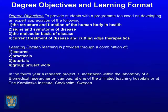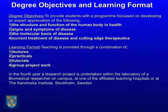So the degree objectives — the focus of this degree is in human health and disease rather than a more basic science degree. The first thing we try to teach is the structure and function of the human body in the healthy state, because it's very important to understand that before you can understand what goes wrong in disease. We then follow on to look at the signs and symptoms of disease, the molecular basis of disease, understanding exactly what's happening in disease in the human body, and finally the current treatments of disease and the new cutting-edge therapeutics that we can use to fight disease.